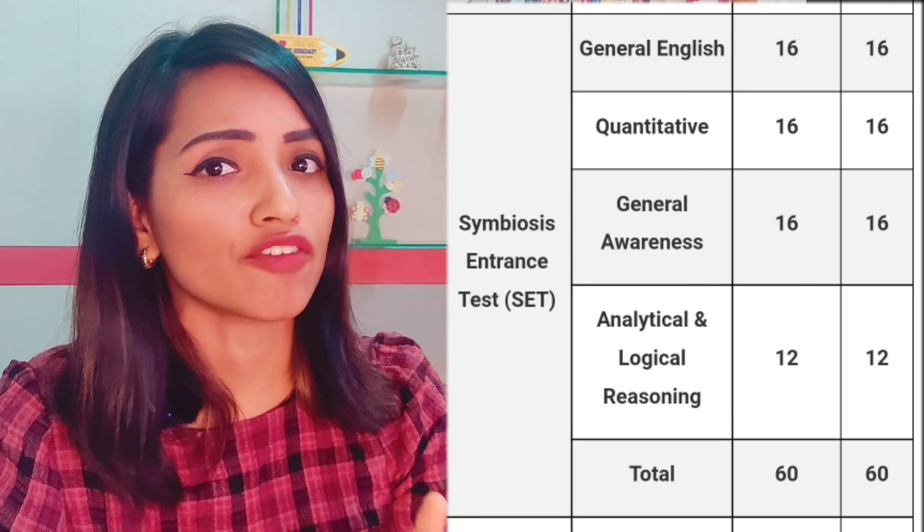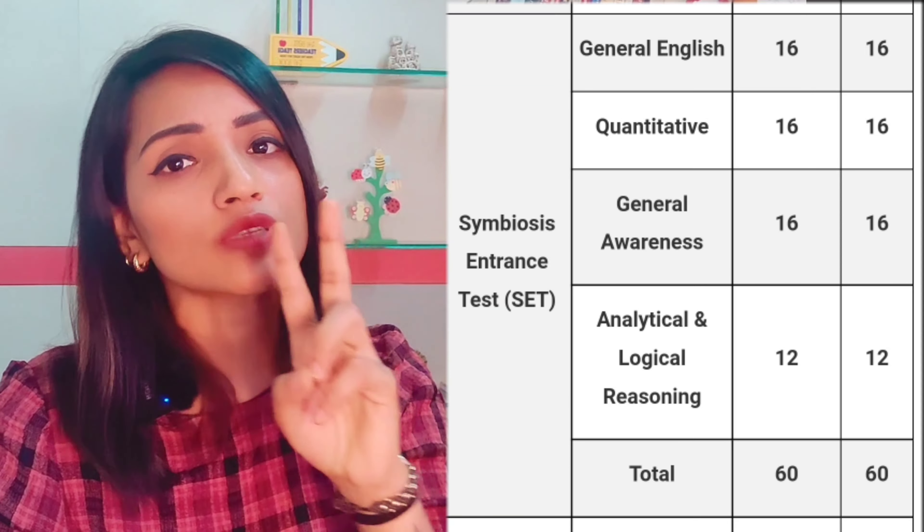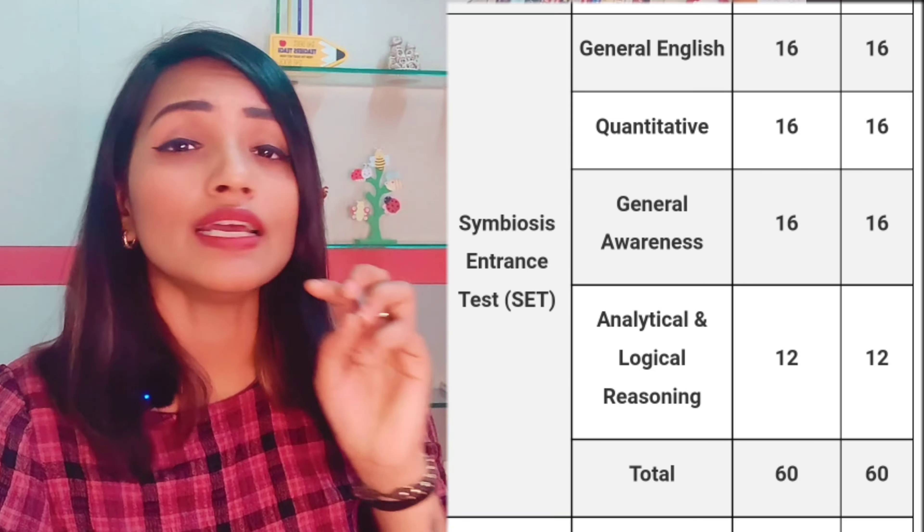Complete your board exams first — after that also you can take a call to fill this form. Coming to the entrance exam fees: entrance exam registration fee is ₹1,950. But you also have to pay ₹1,000 more to select one of the entrance exams. So if you are opting for SET, you have to pay ₹1,950 plus ₹1,000, and this amount is non-refundable. All the registration process will happen online — you can pay online via the link. Everything is there on their website, and I'll put all the links in my description box.